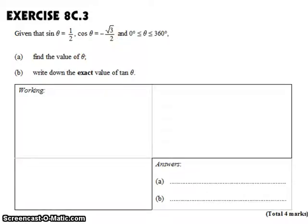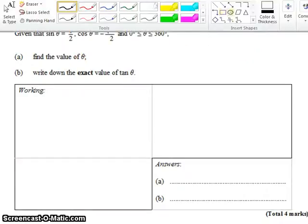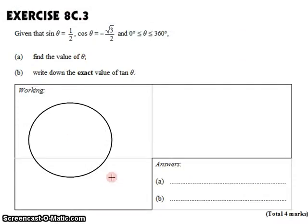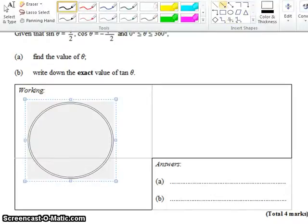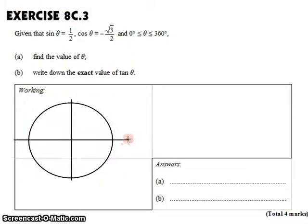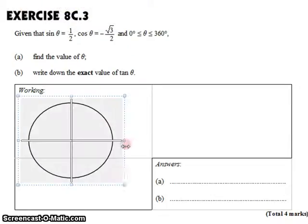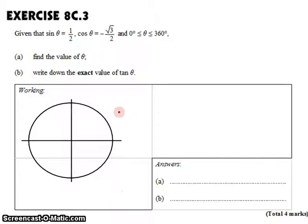Since we're given information about its horizontal and vertical components, I think it would be wise to draw a unit circle. Now we know that the vertical component is positive 1/2, so we go up in the positive direction, halfway. And the angle has to have this vertical component.